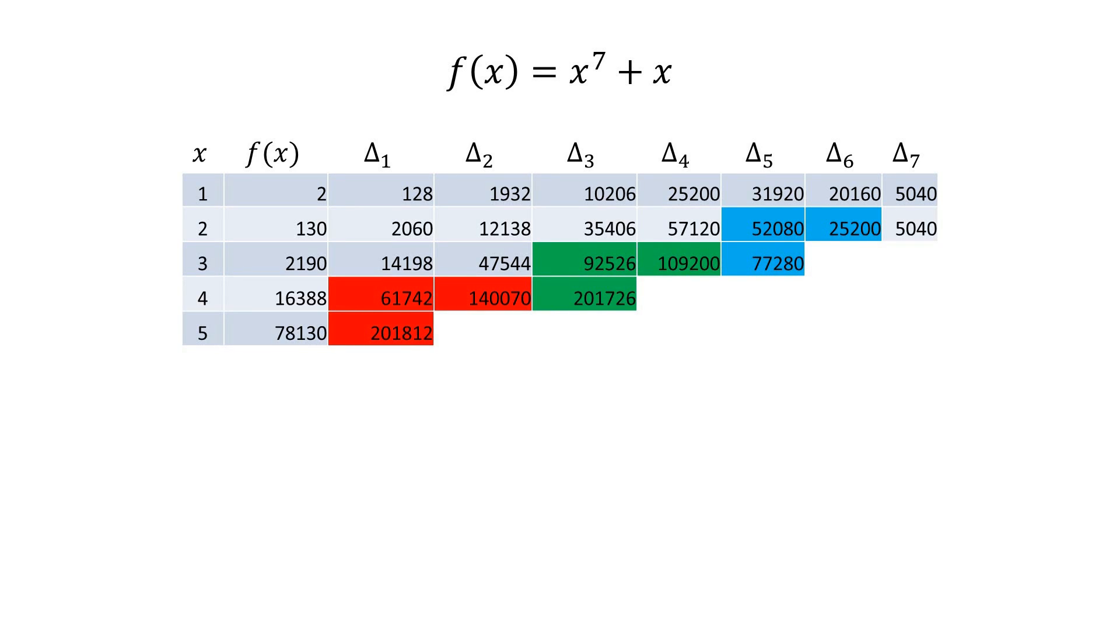Values from the addition of higher order differences flow one column to the left during each step.